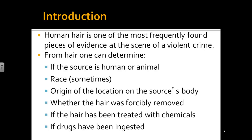From hair there are many different things we can determine. First, we can easily determine if it's human or animal hair. Sometimes we can determine race, but race can be a little difficult nowadays. We can figure out what part of the body it came from — arm hair, eyelashes — whether the hair was forcibly removed or just fell out, if it's been treated with chemicals or colored, and you can also tell from hair if any drugs or poisons have been ingested.